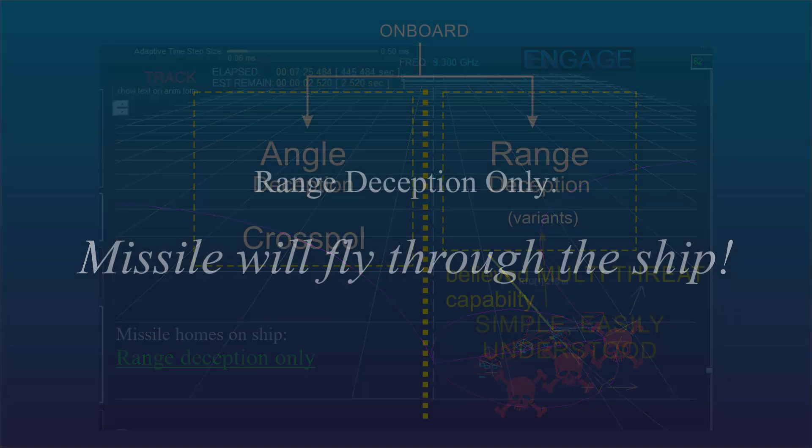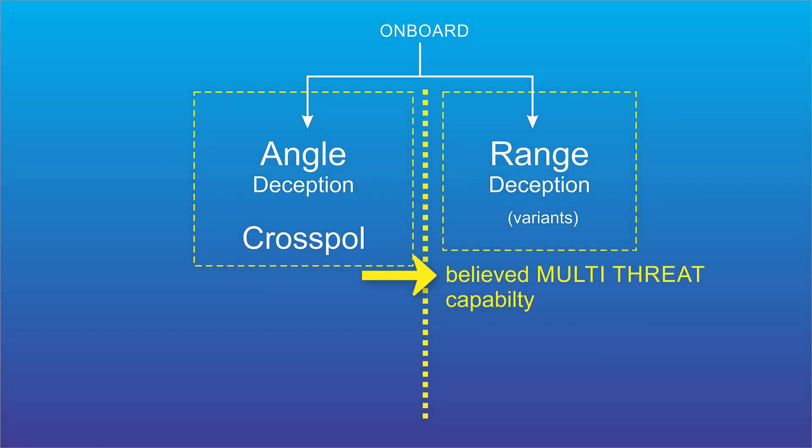But here's the kicker. Range deception was believed to have a multi-threat capability, which it does. And that means the ability to cause range deception against multiple missiles at the same time.